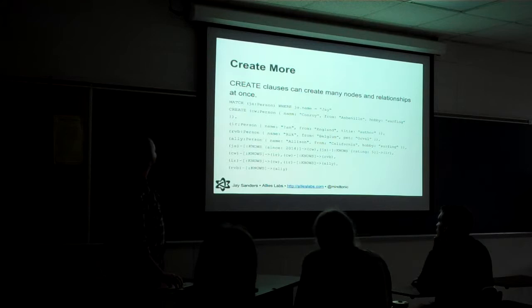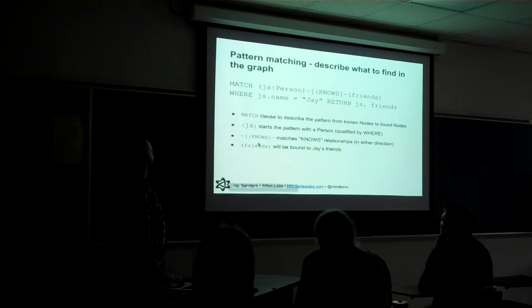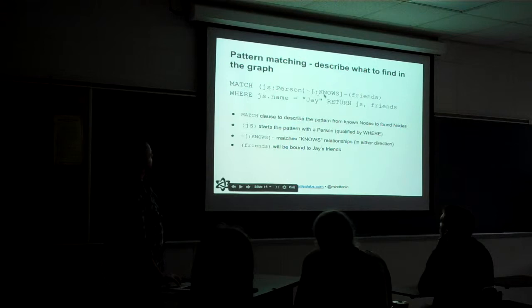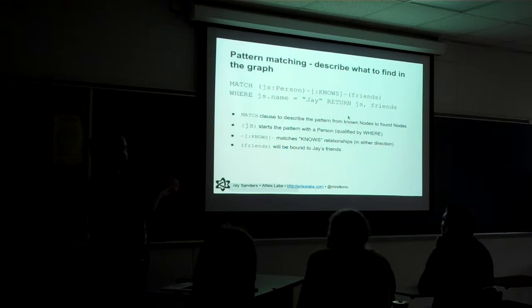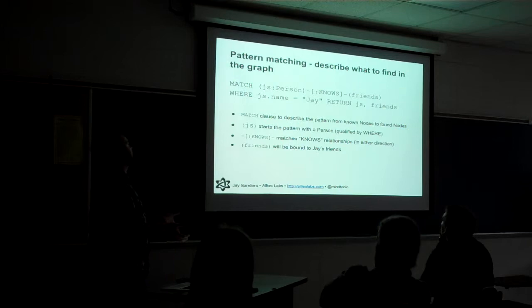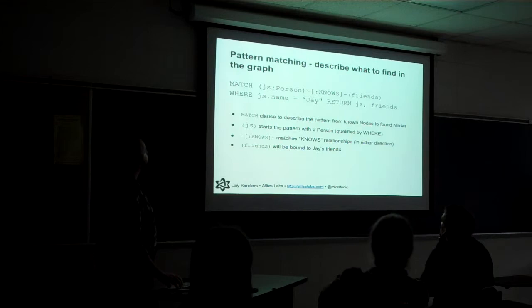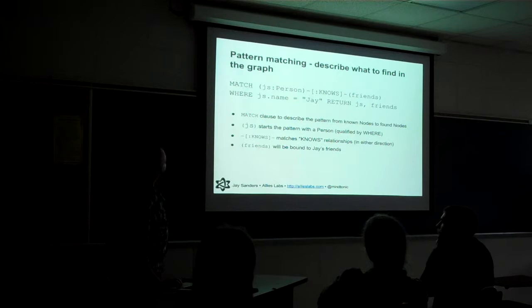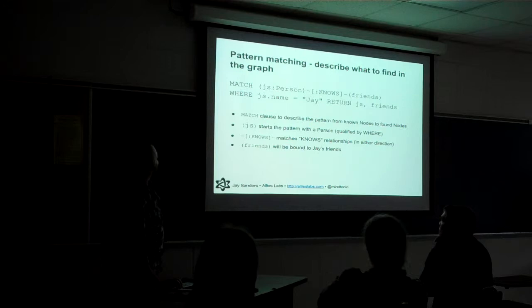Now we get into pattern matching — this is where the power comes in. The node JS is a person assigned that knows friends. What this does is find where name is J and return the node and the friends — basically reaching out from the center node through the relationships and finding the different pieces. There are no arrows in that example versus specifying a direction — so that relationship would be bi-directional: either J knows them, or they know J.